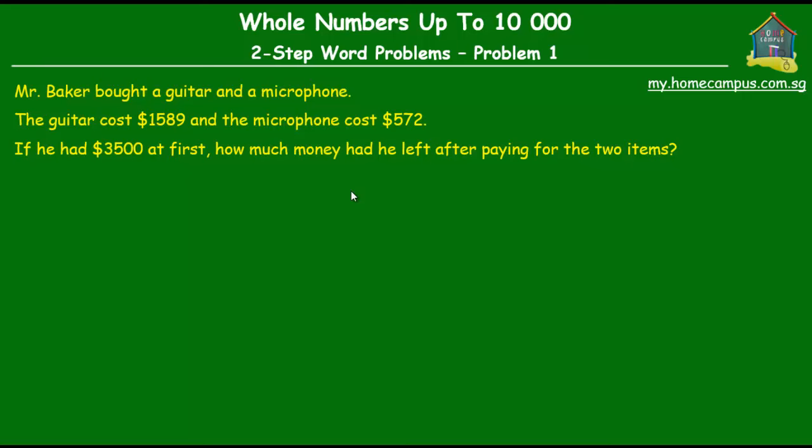The question is: Mr. Baker bought a guitar and a microphone. The guitar cost $1589 and the microphone cost $572. If he had $3500 at first, how much money had he left after paying for the two items?